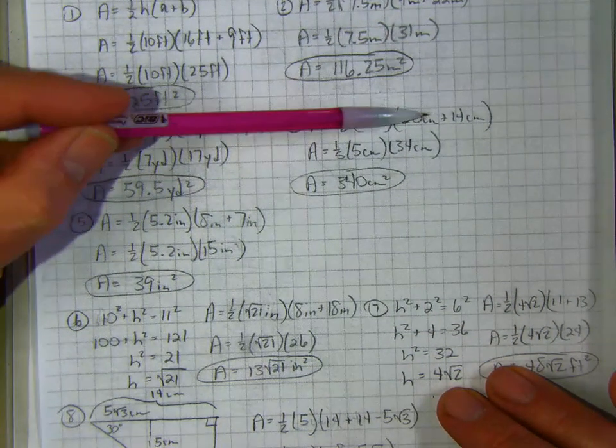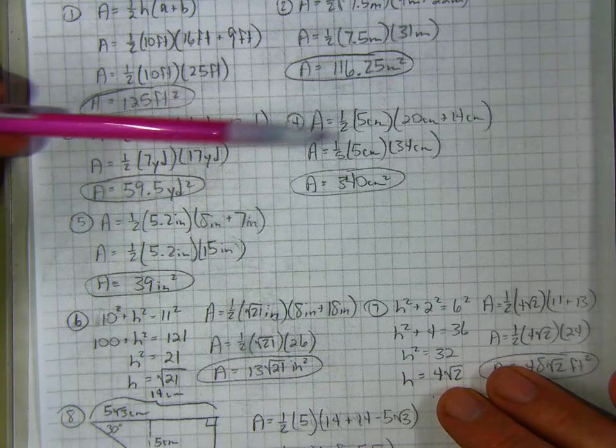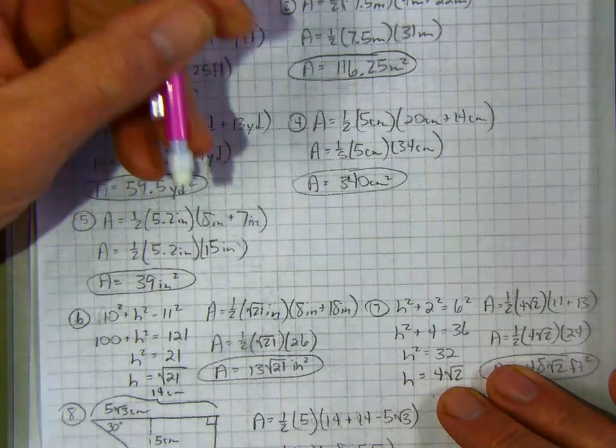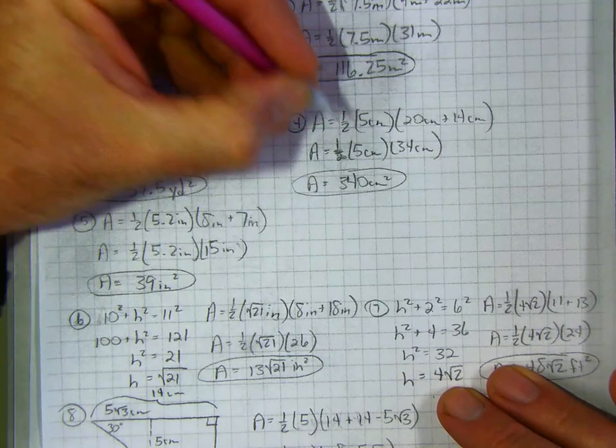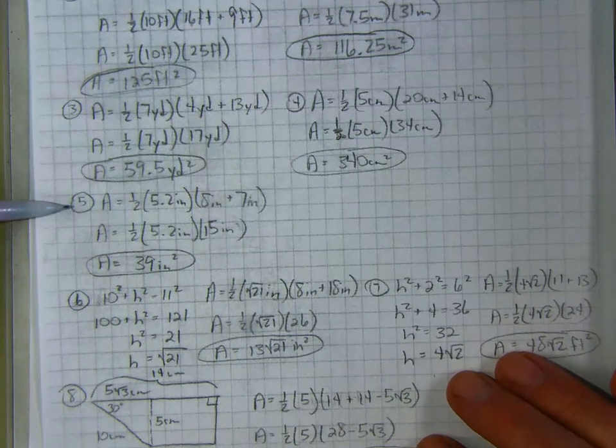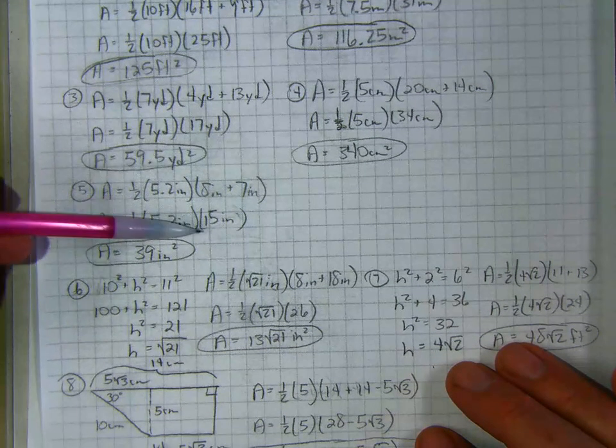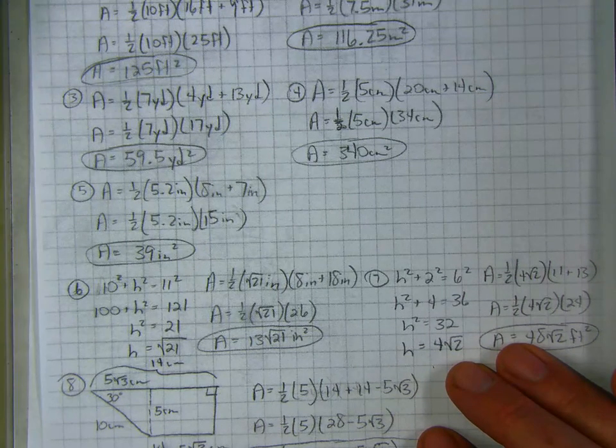There's the answer to 3. Number 4, they give you the two bases, so that's what you add together, multiplying times 5 and taking one-half. That's supposed to be a 2 there, one-half. I don't know where I got a one-fifth. And that one was 340 centimeters squared. And number 5, adding the two bases is 15, multiply times 5.2 and take half. You got 39 inches squared.